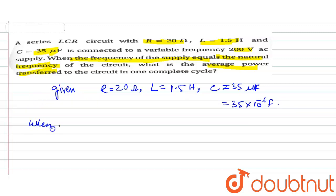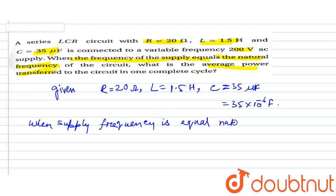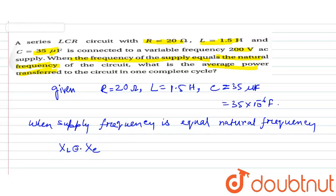When supply frequency is equal to natural frequency, inductive reactance XL is equal to XC. Impedance Z is written as resistance R, so inductive reactance XL is equal to XC and R is written as Z.